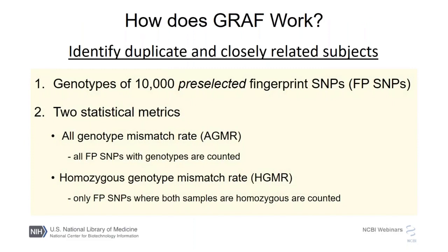So very briefly, how does graph work? This is going to be at a very superficial level. If you have detailed questions, there is a publication in PLOS ONE that came out last year — the link is on many of the pages I'll show you, including the software page where you can download the software. Just to give some fundamental background: a key component in identifying duplicates and closely related subjects is a set of preselected fingerprint SNPs. Right now there are about 10,000, and there may be plans to add to that.